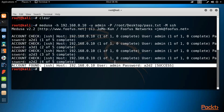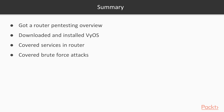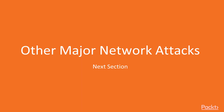We have successfully performed a brute force attack using Hydra and Medusa inside Kali Linux. For the section summary: we learned about router pentesting, how to download and install Vios inside a virtual machine, how to assign an IP address, how to start SSH and Telnet services inside the router, and finally how to perform a brute force attack from Kali Linux. In the next section we will learn about other major network attacks. Thank you.